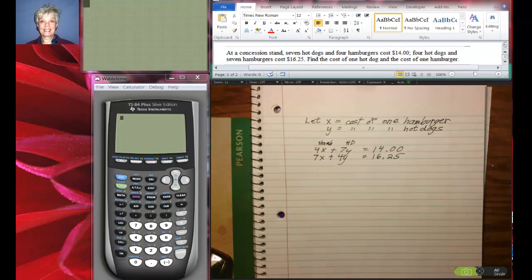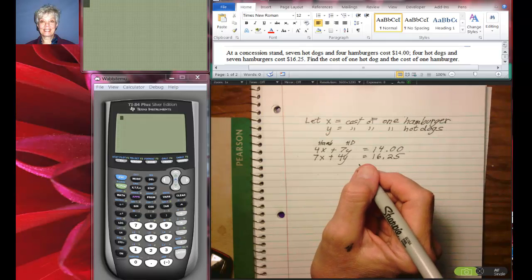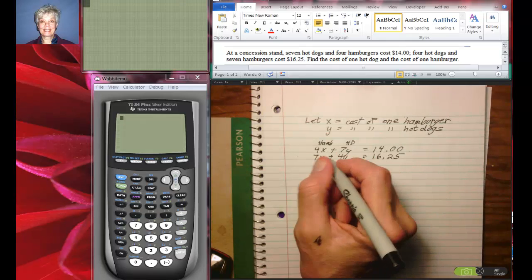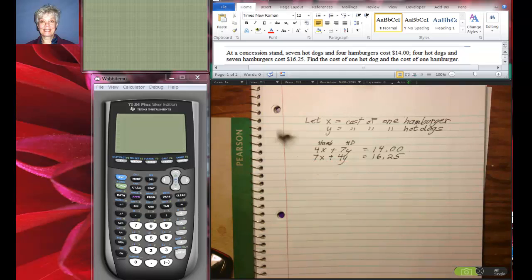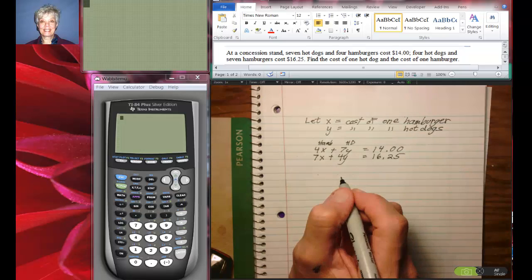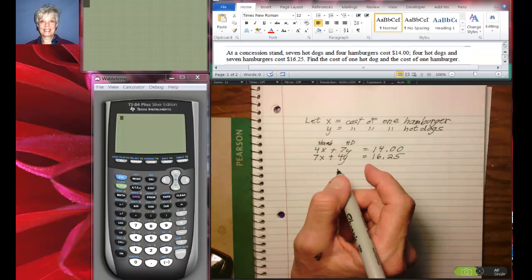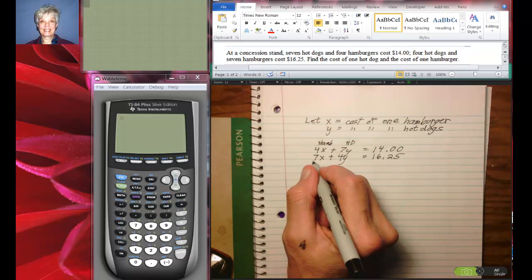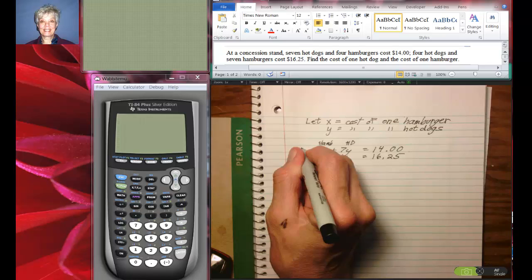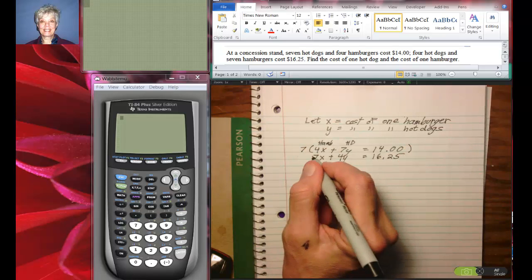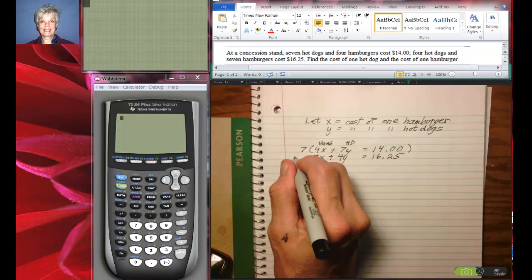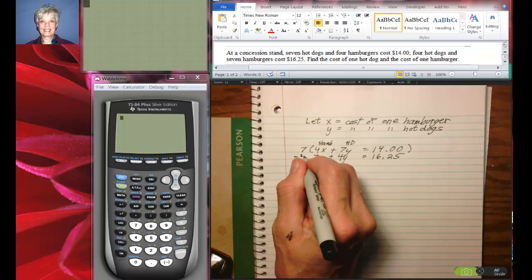I want to find the hot dogs first, so I'm going to eliminate the x's. So what do I want? I think I'll multiply the first equation by 7 and the second equation by negative 4.